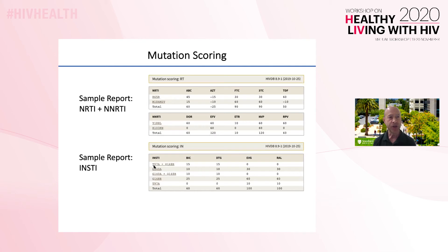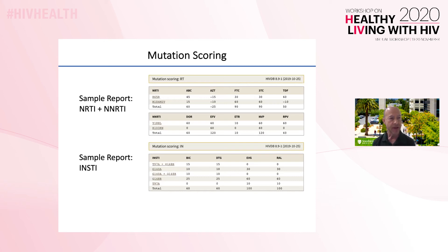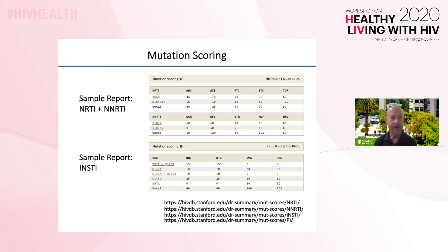Several mutations can increase susceptibility to a drug, and these receive negative scores for that drug. For example, M184I/V increases susceptibility to AZT and tenofovir, whereas K65R increases susceptibility to AZT. There are four pages containing the complete list of scores for each drug.